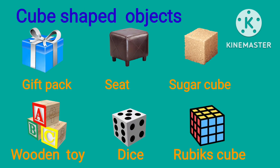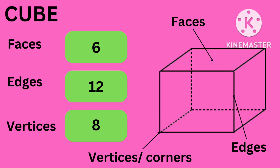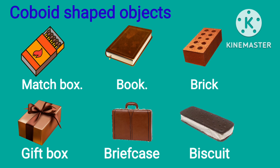Cube-shaped objects: look at the shapes of objects below. All these objects have the shape of a cube — gift pack, seat, sugar cube, wooden toy, dice, Rubik's cube. The cube has six faces, 12 edges, and eight vertices or corners.